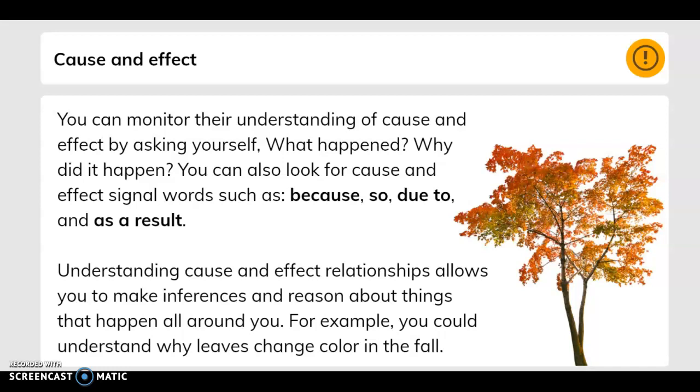You can monitor their understanding of cause and effect by asking yourself what happened, why did it happen. You can also look for cause and effect signal words such as because, so, due to, and as a result. Understanding cause and effect relationships allows you to make inferences and reason about things that happen all around you. For example, you could understand why leaves change color in the fall.